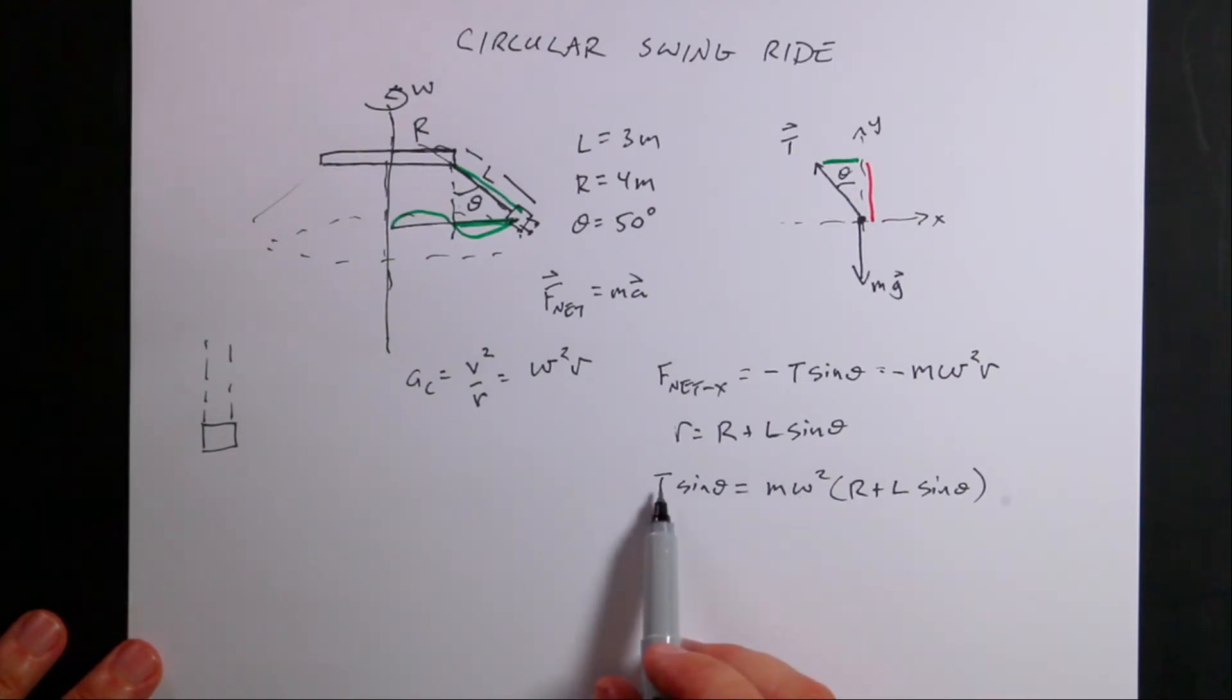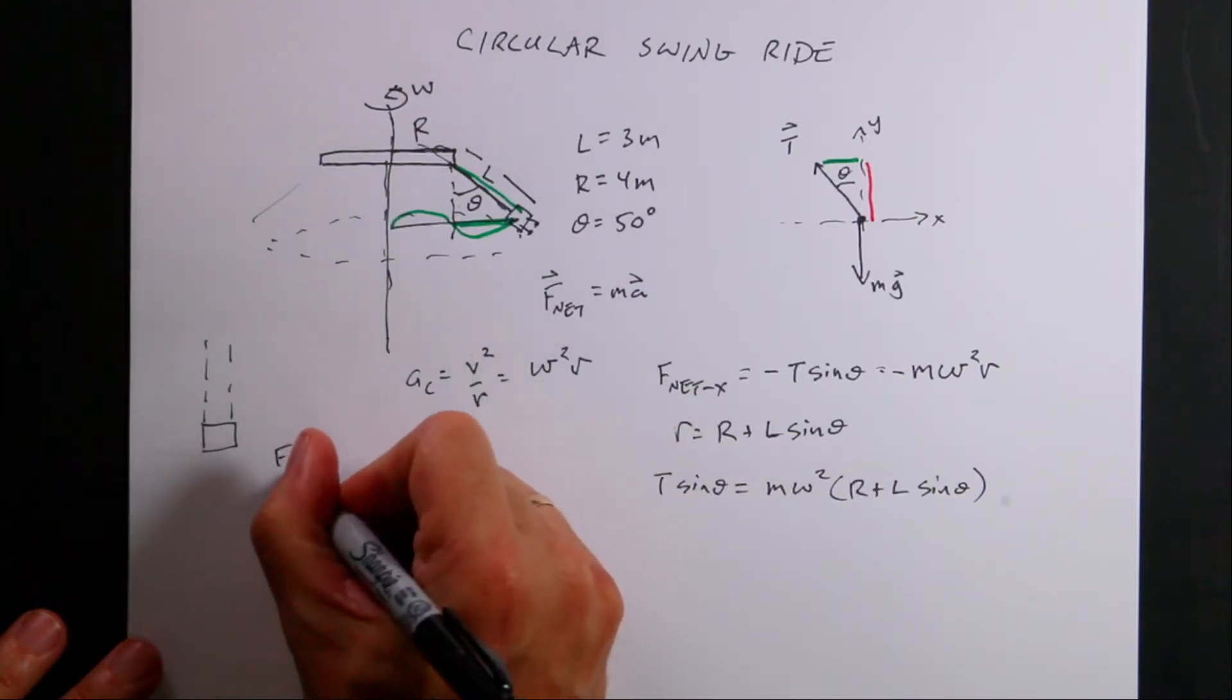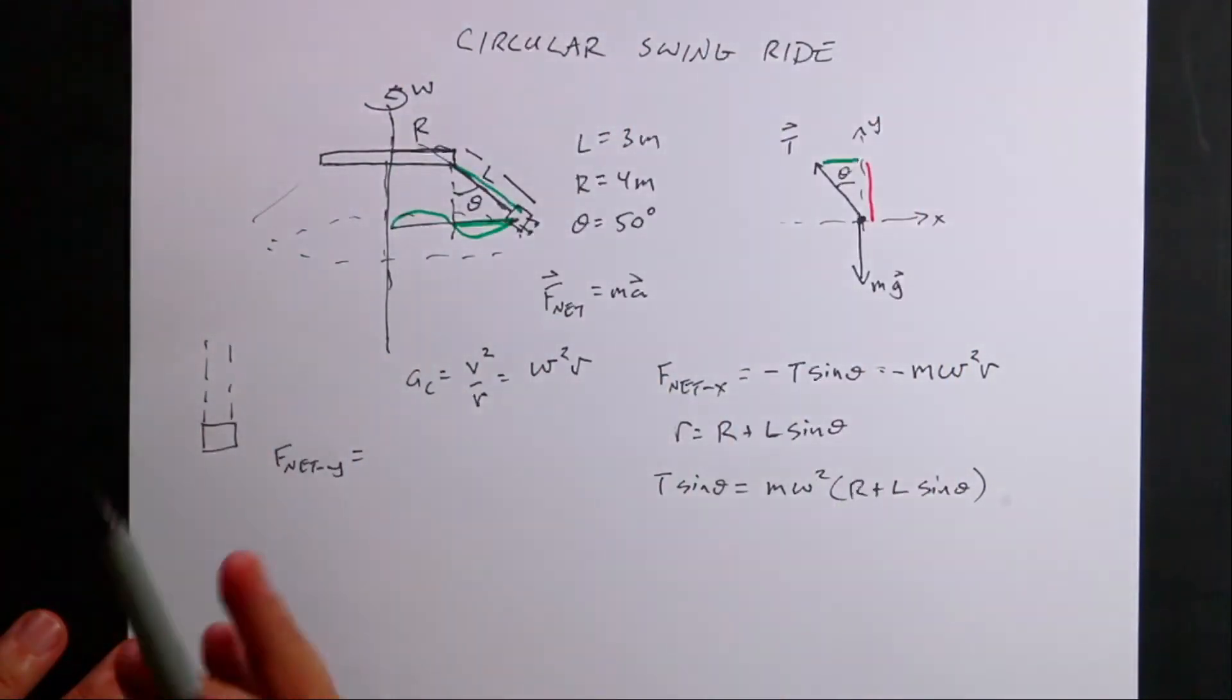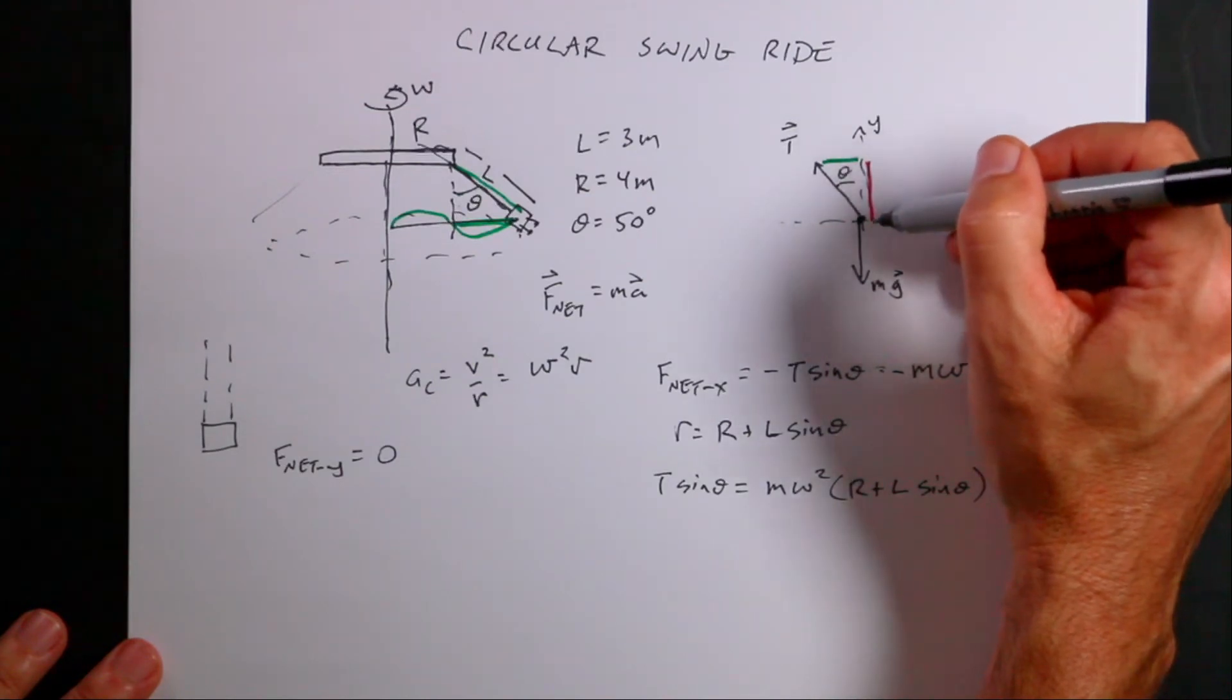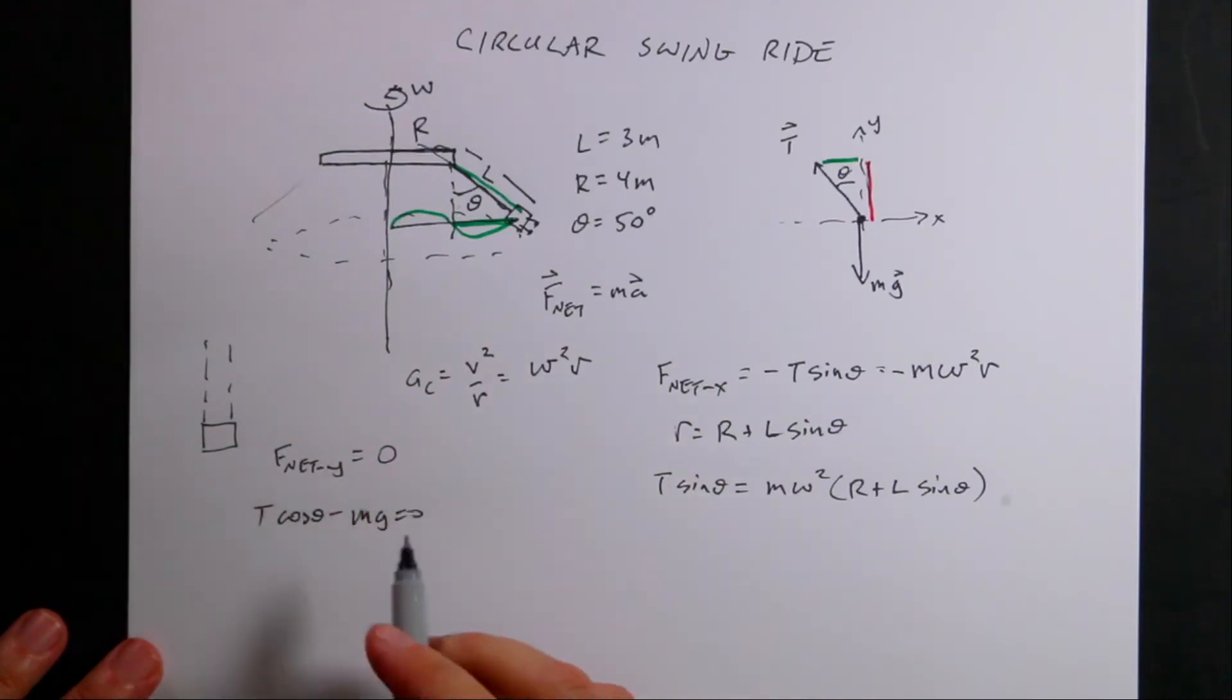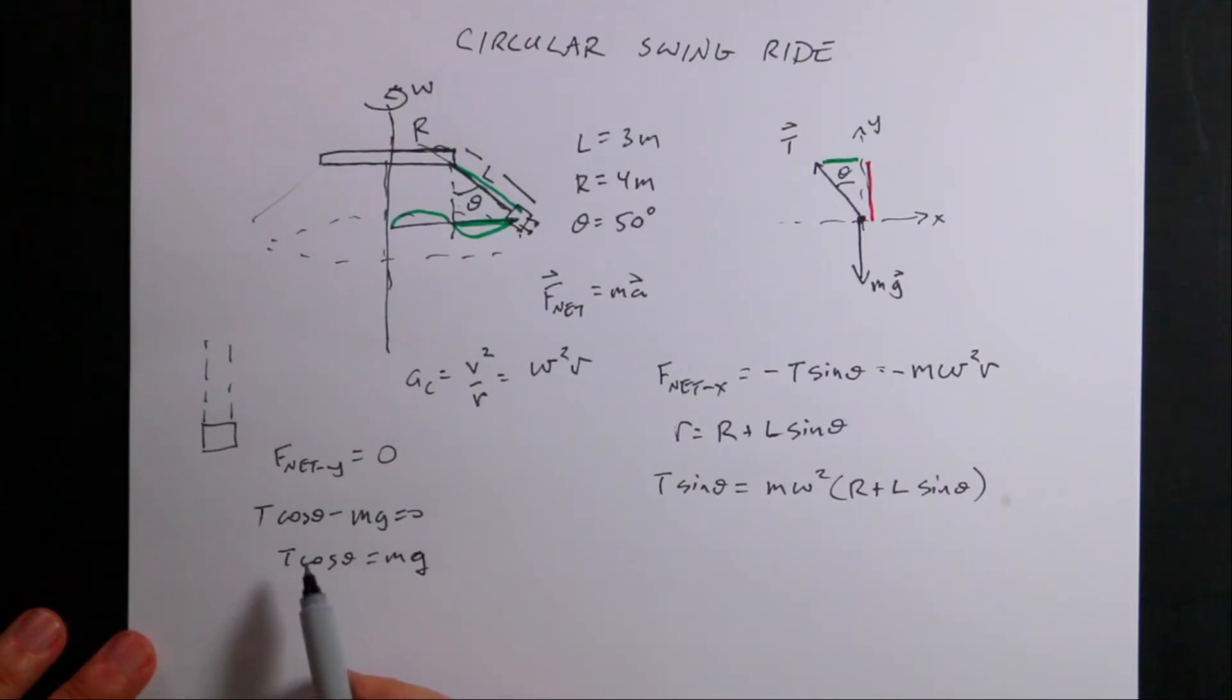I'm trying to solve for ω but I don't know T. So let's look at the y component. F_net_y - the y acceleration is zero if they stay in a horizontal circle. What forces act in the y direction? A component of the tension. That's the adjacent side, so T cos θ - mg = 0. Solving for T: T cos θ = mg, so T = mg/cos θ.